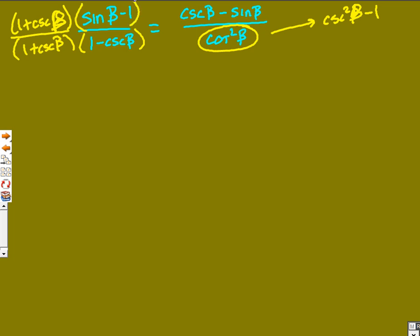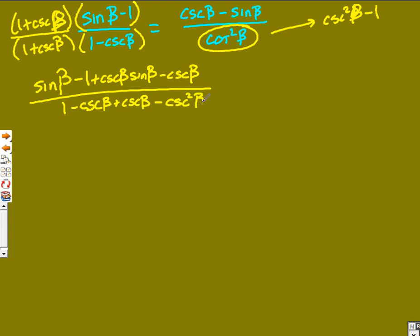So when I do that, I'd have to foil on top. I would have sine of beta for the first, then the outside, then the inside, and then last. All over on the bottom, I'm going to need to foil that out. So I'll do that first, outer, inner, and last would be cosecant squared. So now let's try to simplify some of this. Cosecant of beta is the only thing I'm really going to change there in that numerator right now, because cosecant is one over sine of beta. I'm going to keep everything else on top the same.